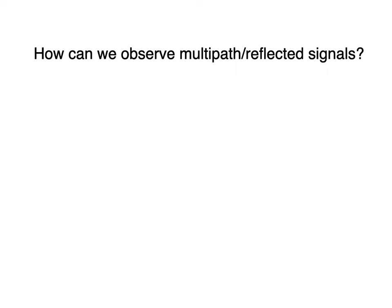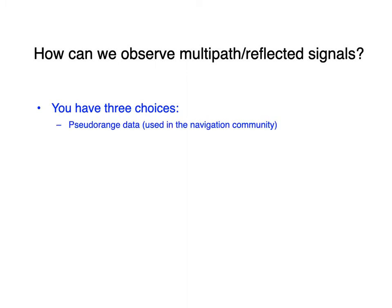So how can we observe multipath? We have three choices. First is pseudorange data — it has a slightly different form of the equation but it's noisy. It's used in the navigation community but has its own complexities, including large errors and dependence on clocks, atmosphere, and orbits.